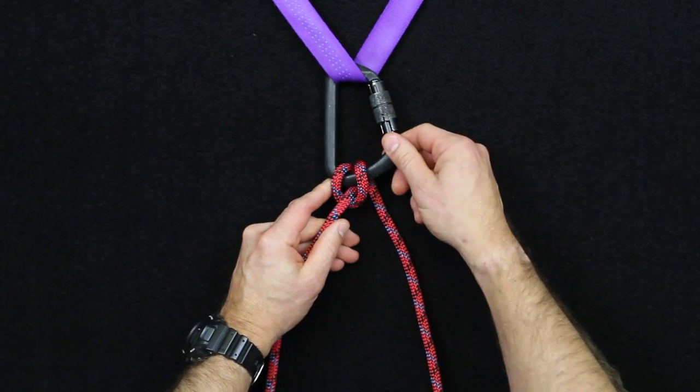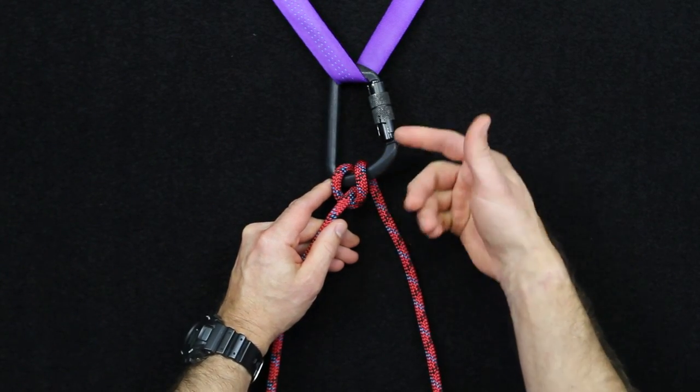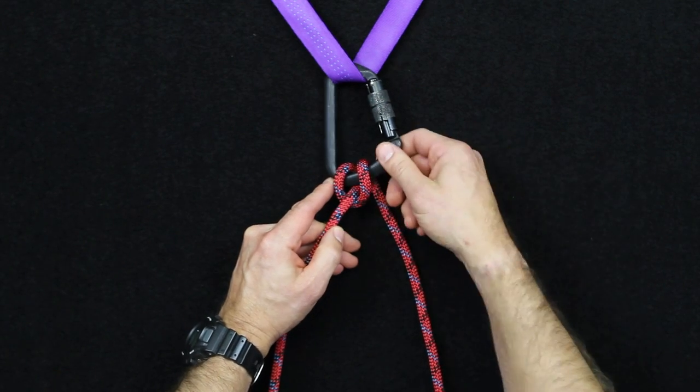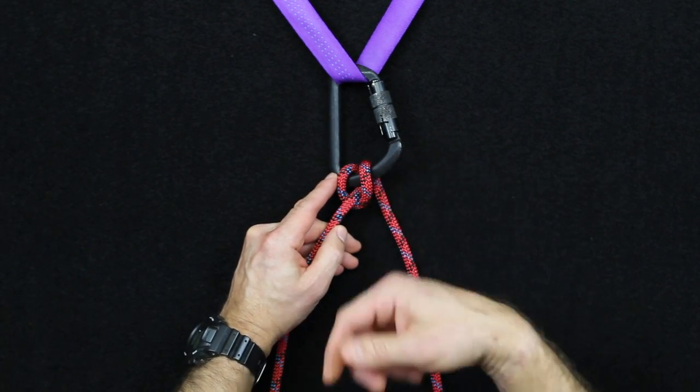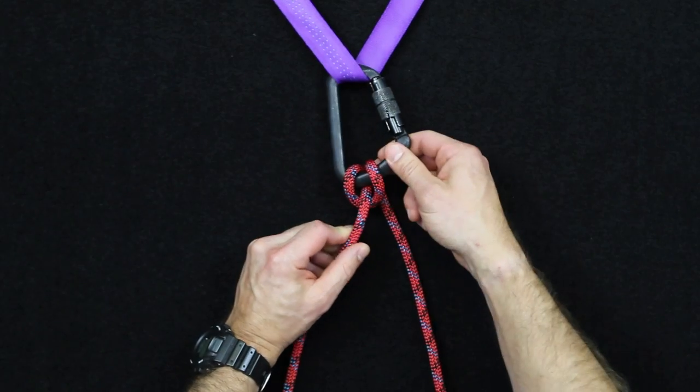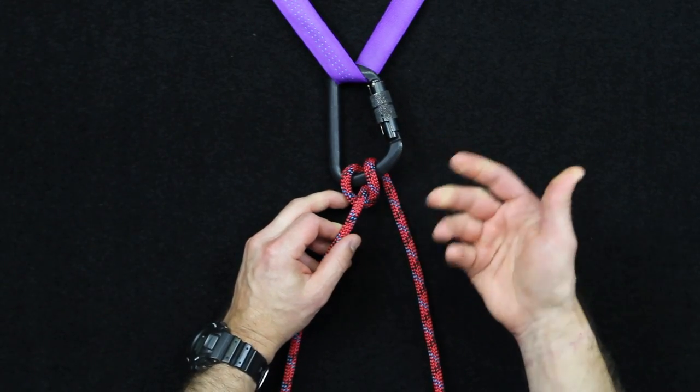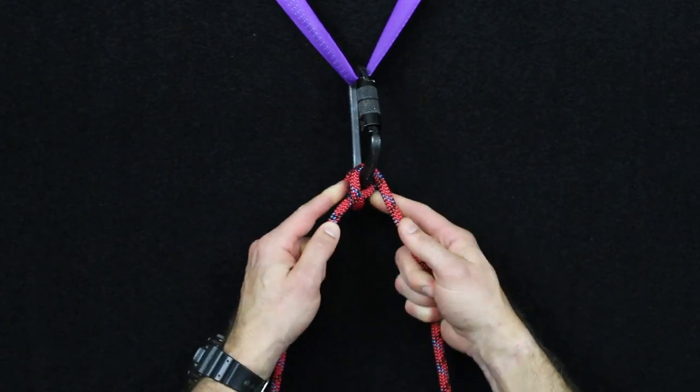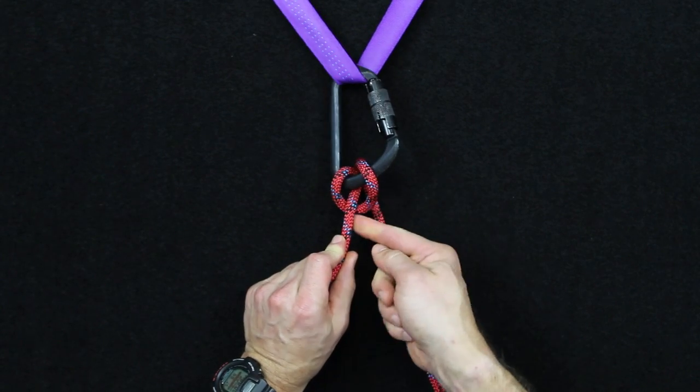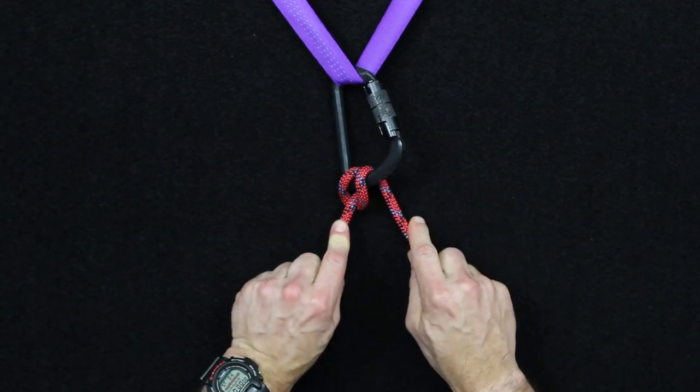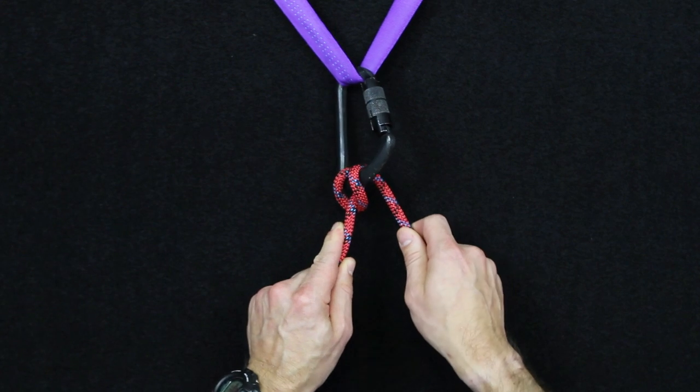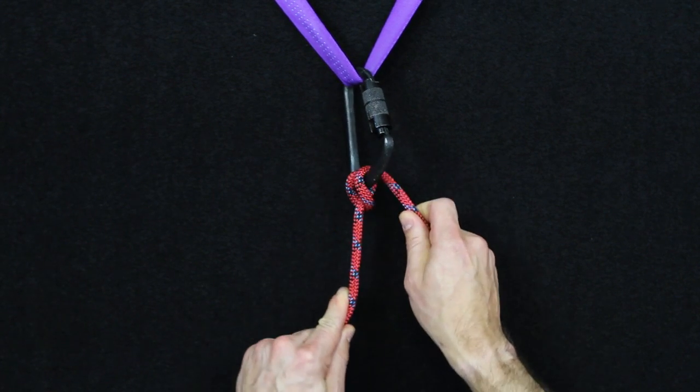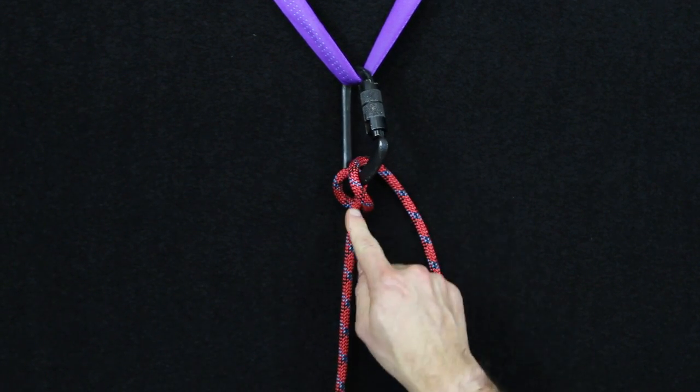So the other thing that it's good at is that it can dissipate heat better than a belay device, in my opinion, because no two surfaces of the rope are in contact with each other for more than an instance. You can see that as this routes through, it does pass against the sheath of the rope, but it's not for a very long time.